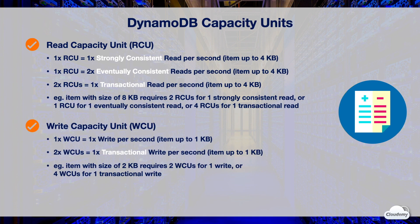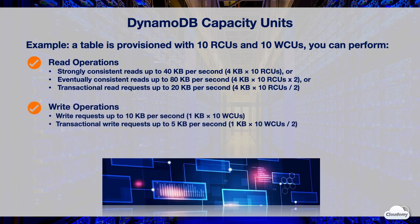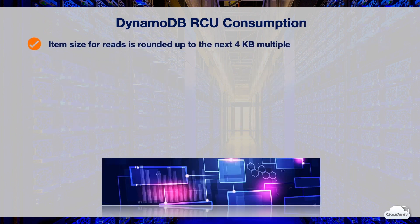One WCU gives you one write for an item up to 1 KB. The total number of WCUs doubles when you perform transactional writes. For example, if an item size is 2 KB, you need two WCUs for one write, or four WCUs for one transactional write. Suppose you have a table with provisioned capacity of 10 RCUs and 10 WCUs — your application can perform strongly consistent reads up to 40 KB per second, eventually consistent reads up to 80 KB per second, transactional reads up to 20 KB per second, writes up to 10 KB per second, or transactional writes up to 5 KB per second.